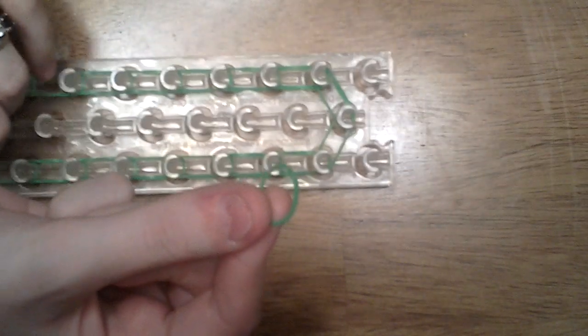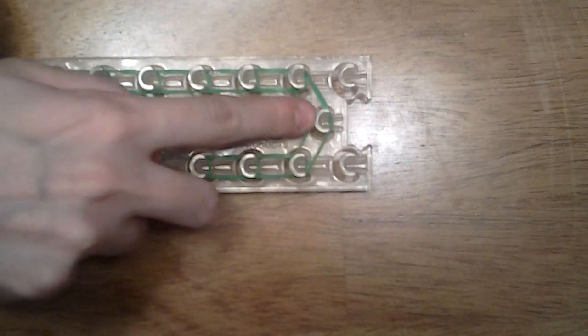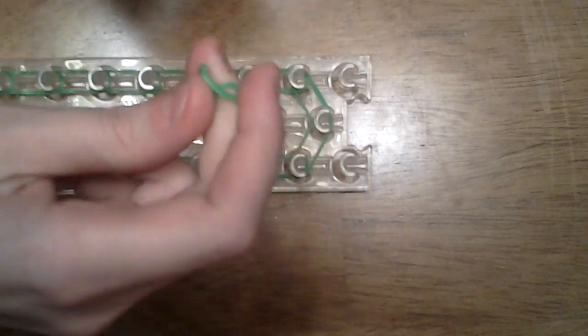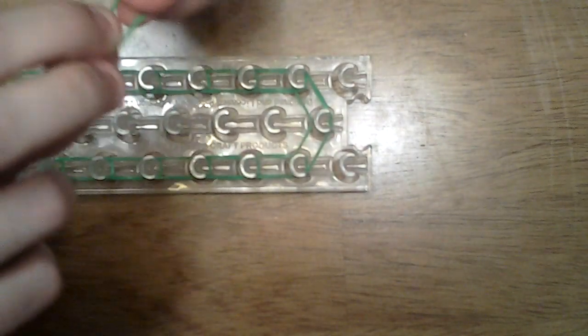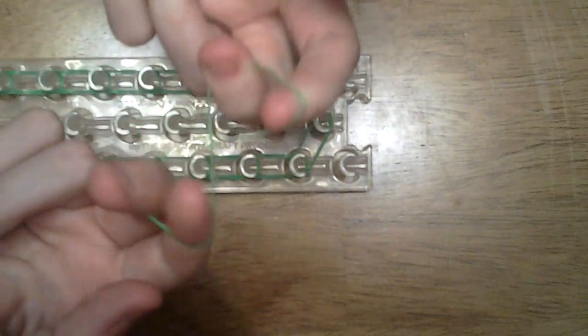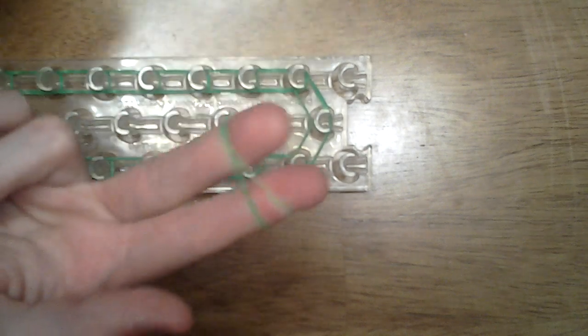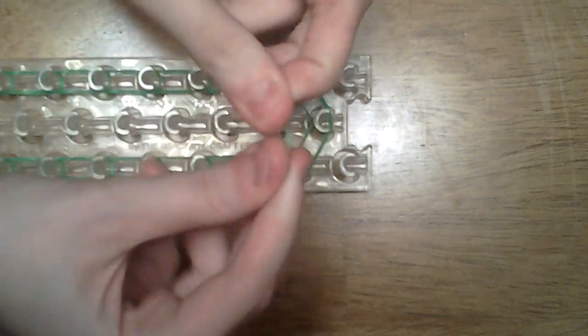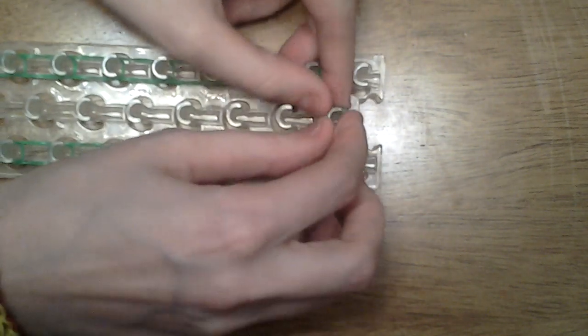Alright, now, once we have our border done, you're going to take a green band and you're going to place a cap band on this top middle peg right here. If you don't know how to do that, what you want to do is you want to take your band, stretch it out, cross it over until a figure eight, and fold it upon itself, just like that. Now, place that on the peg.